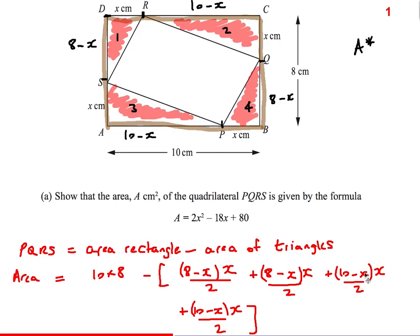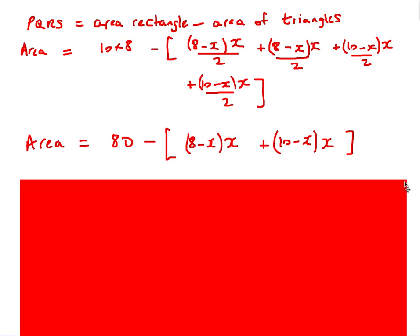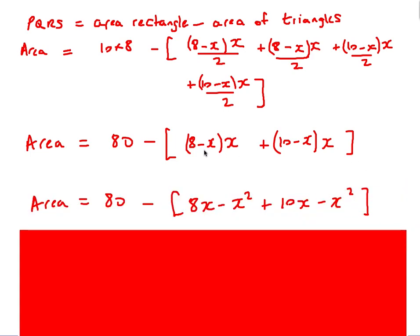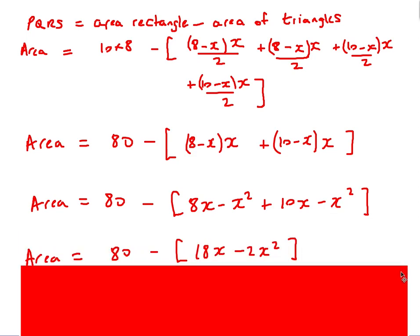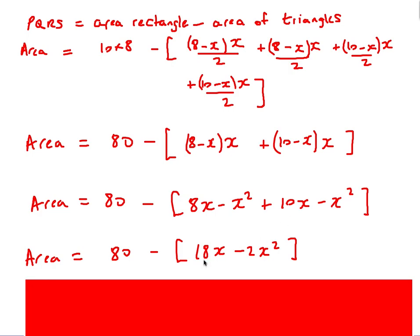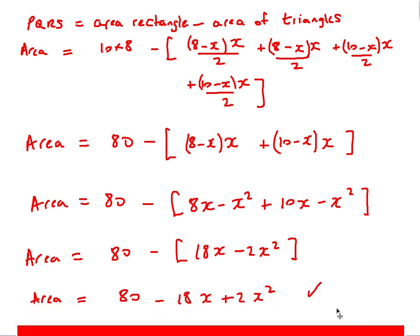So the area equals the rectangle take away those four triangle areas. You'll notice they simplify — we have two halves of each, giving one lot of (8 - x)x and one lot of (10 - x)x. Expanding: 8x - x² and 10x - x². Combining: 8x + 10x = 18x, and -x² - x² = -2x². The final step is to be careful with the negative — I'm taking away 18x and taking away negative 2x squared, which gives positive 2x². That last step is where people most likely make a mistake, but you're given the answer so you can check.